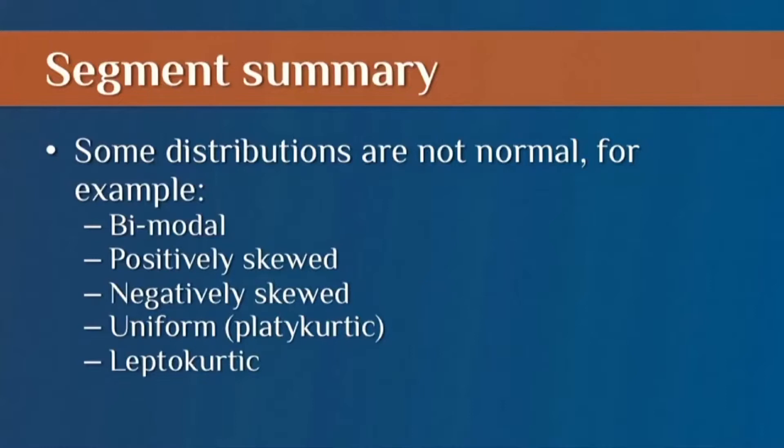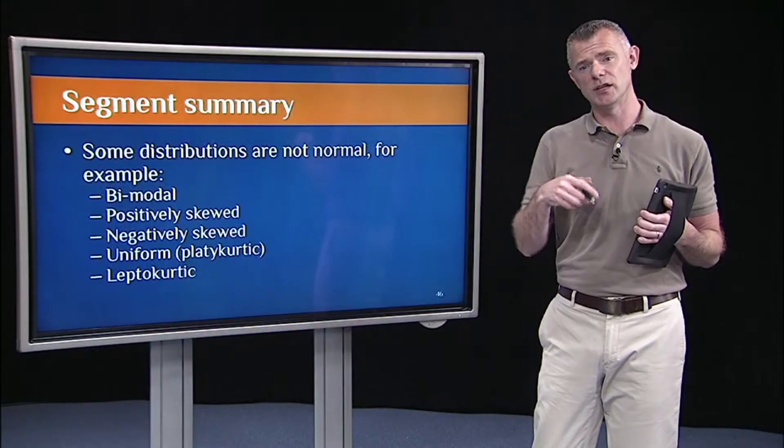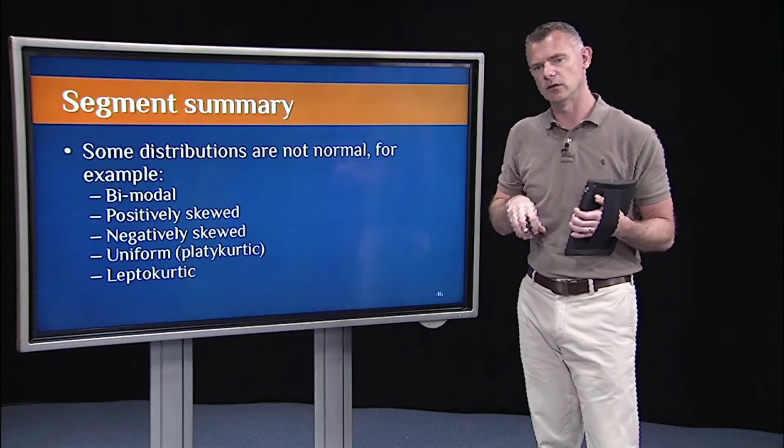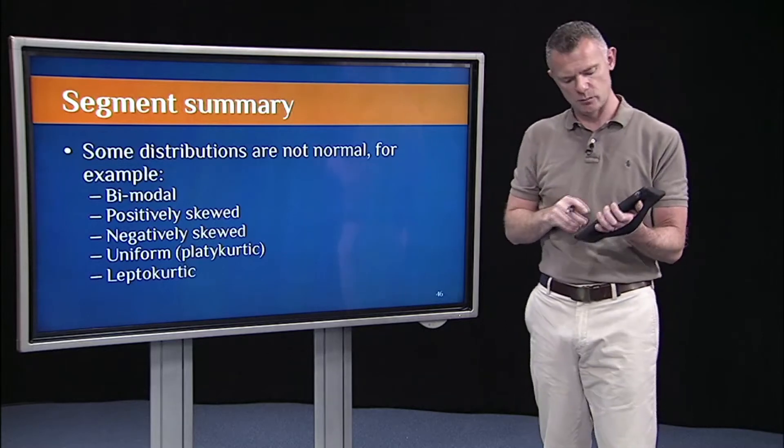We looked at positively skewed distributions, negatively skewed. We looked at uniform distributions. So that was like the white wine distribution in France. That's uniform, or another phrase for that is platycurtic. And the last type that we looked at was leptocurtic. That was like the white wine distribution in Argentina with that one steep peak, also called a leptocurtic distribution.